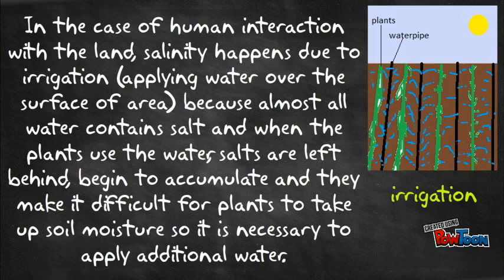In the case of human interaction with the land, salinity happens due to irrigation, applying water over the surface of area, because almost all water contains salt and when the plants use the water, salts are left behind, begin to accumulate and they make it difficult for plants to take up soil moisture.